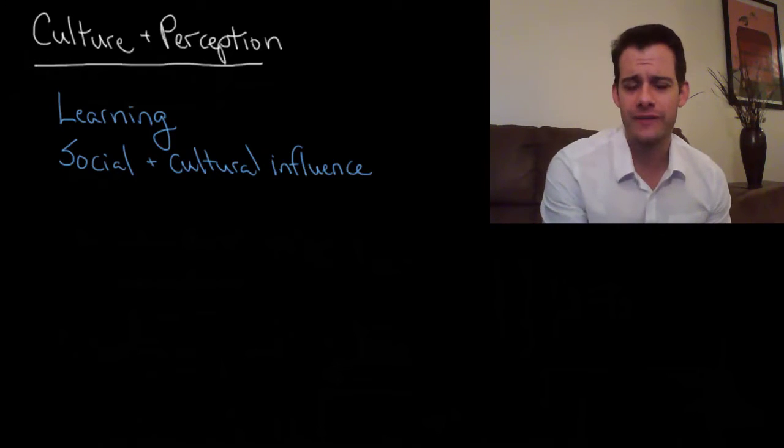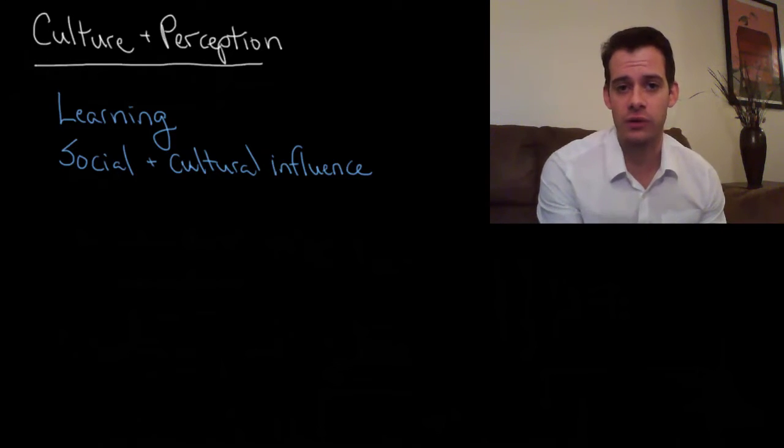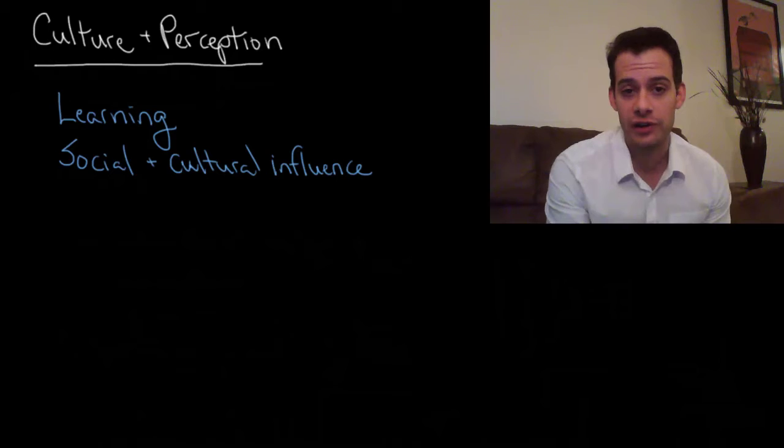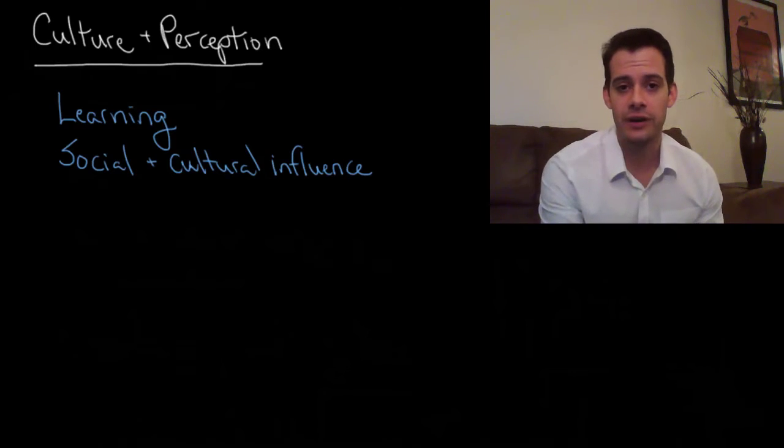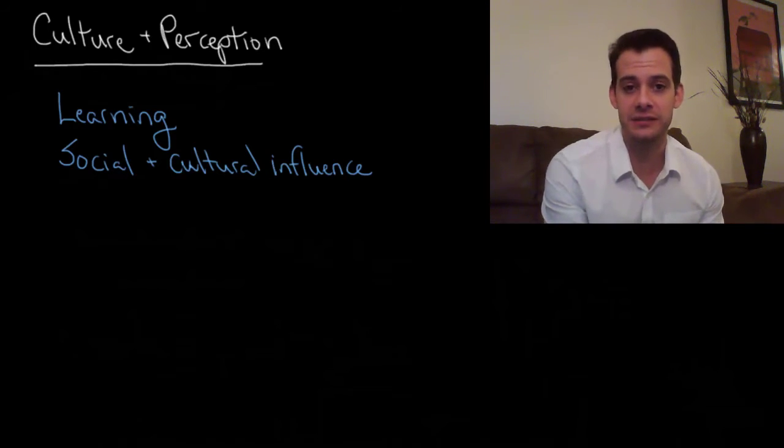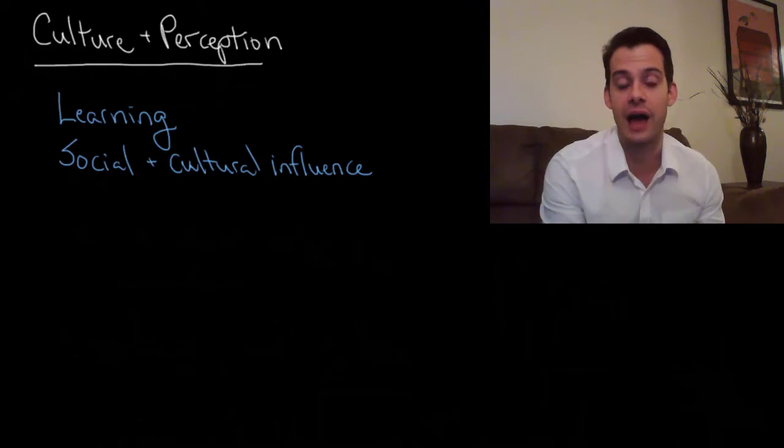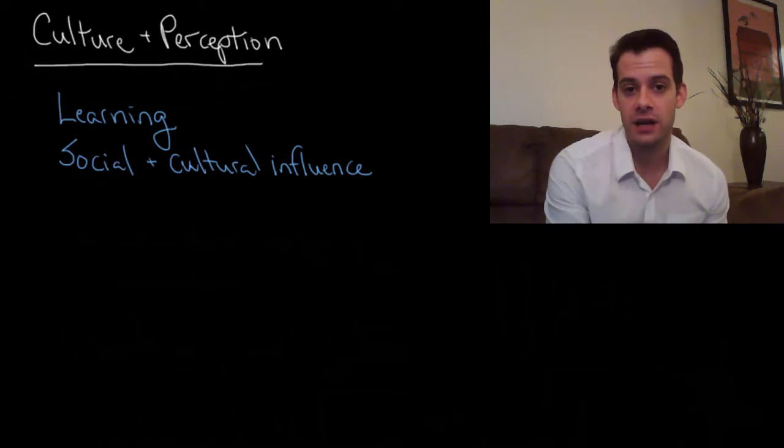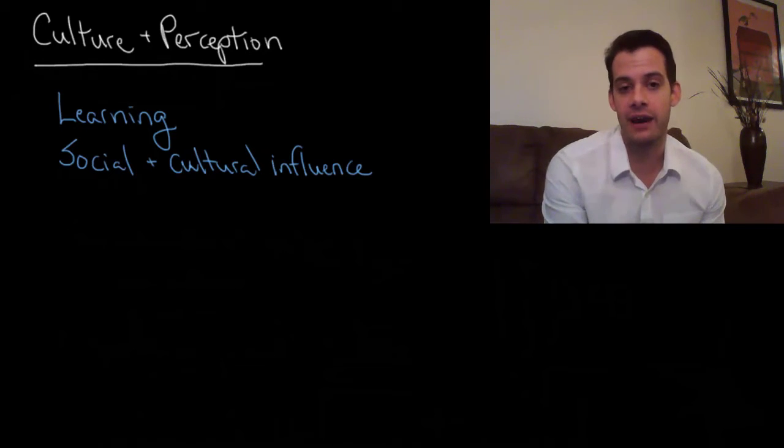In the previous videos we've seen that learning plays a role in our perception, that we have to learn how to perceive. We have to figure out how to make sense of the information coming in from our senses and learn how to interpret and organize this information. Now if we have to learn how to perceive, then this opens up the possibility for social and cultural influence, because our culture can influence our learning and then our learning can influence how we perceive the world.